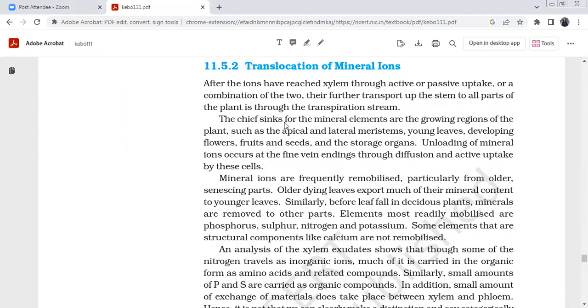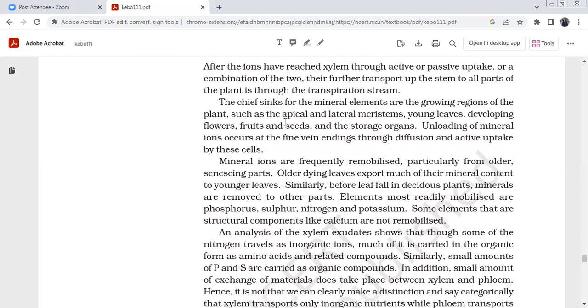Further transport up from the soil to all parts of the plant is through the transpiration stream. The chief sinks for mineral elements are the growing regions of the plants - the apical meristem, lateral meristem, and young leaves.